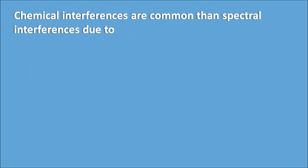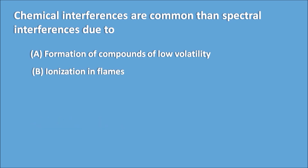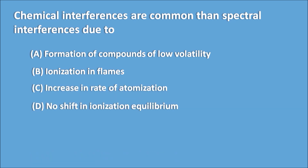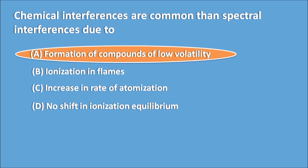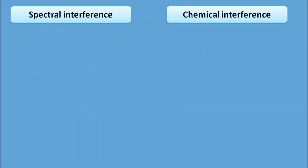Third question: Chemical interference is more common than spectral interference due to — A: Formation of compounds of low volatility, B: Ionization in flames, C: Increase in the rate of atomization, D: No shift in the ionization equilibrium. Formation of compounds of low volatility is the main reason for chemical interference. We have two important types of interference: spectral interference and chemical interference. Spectral interference is also called cationic interference.